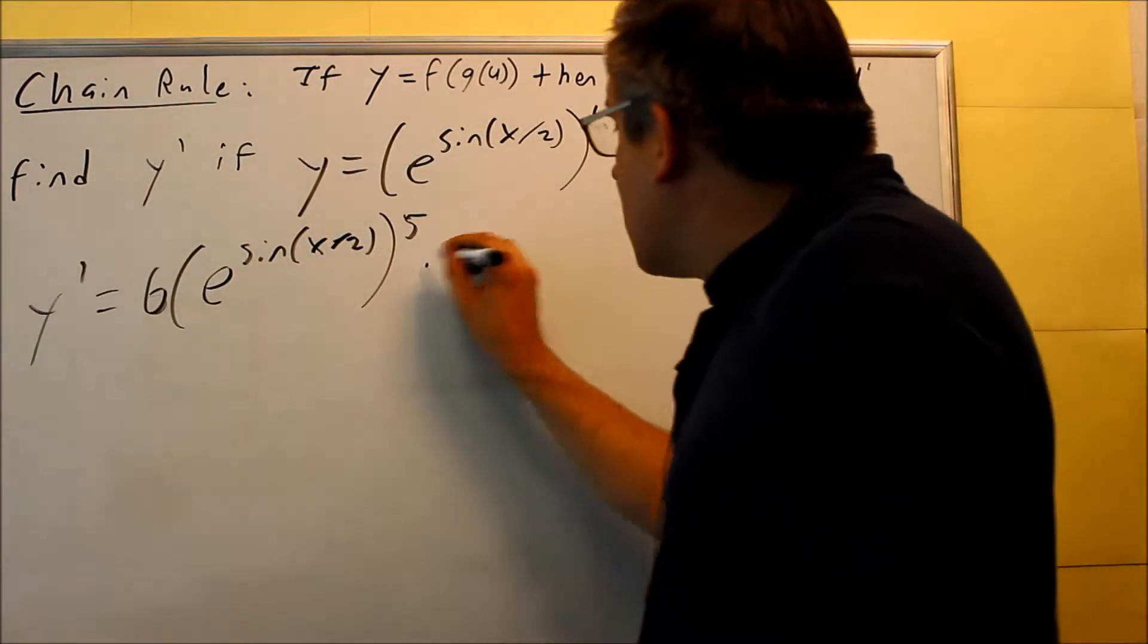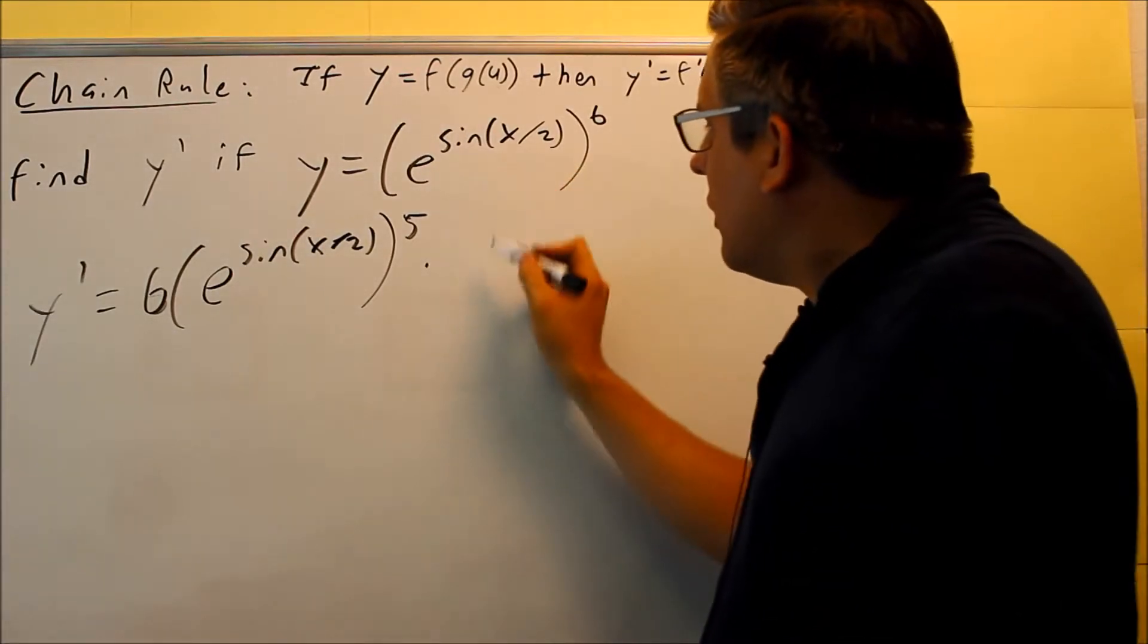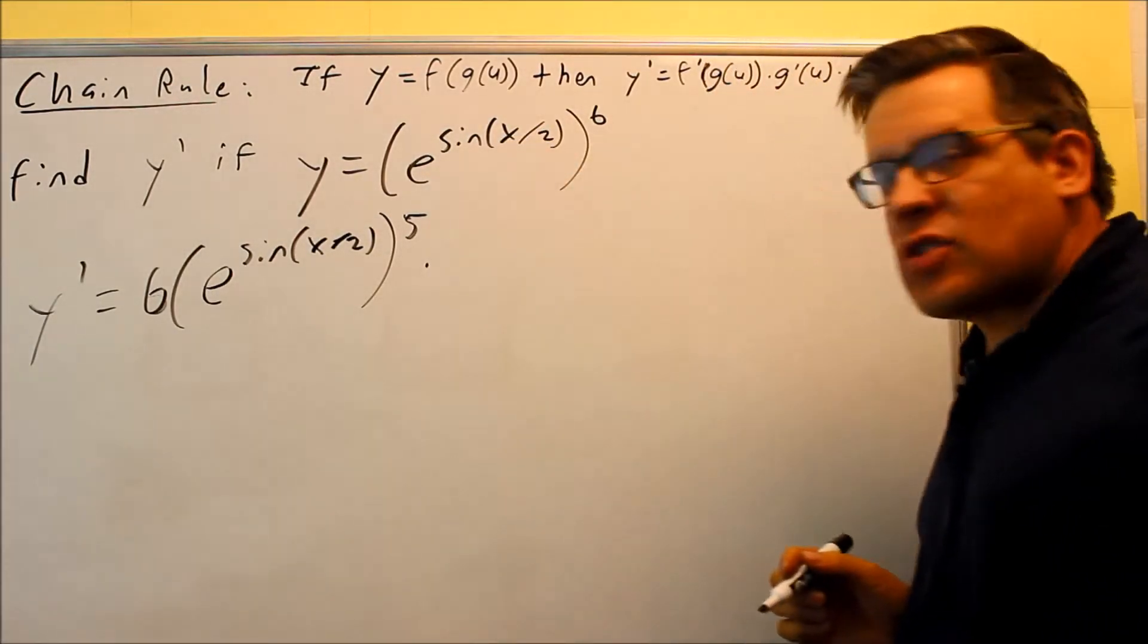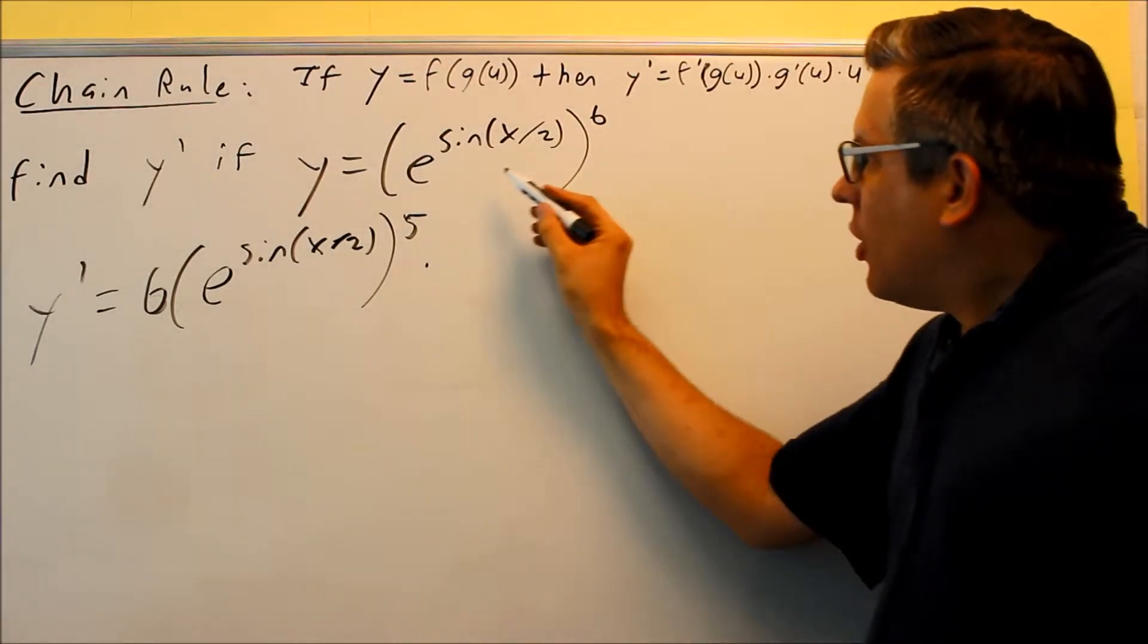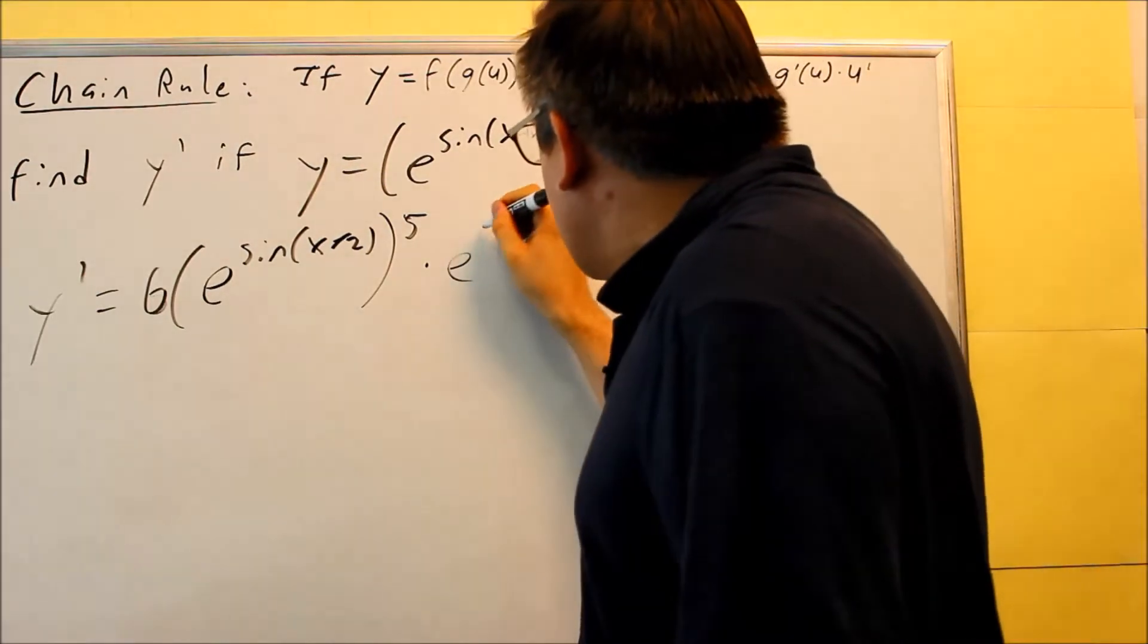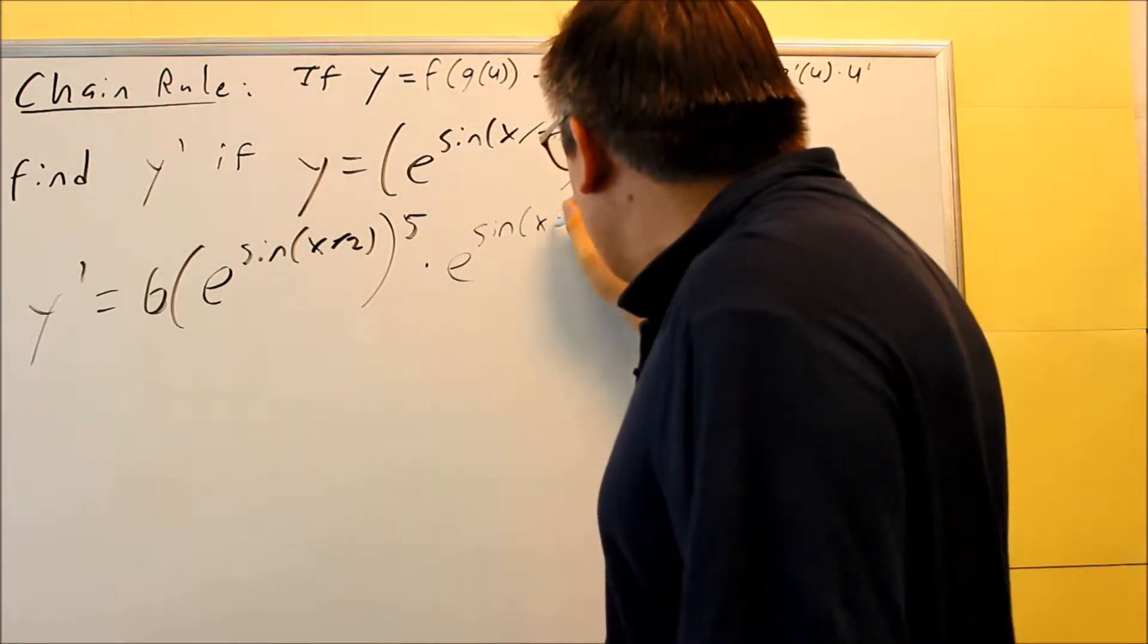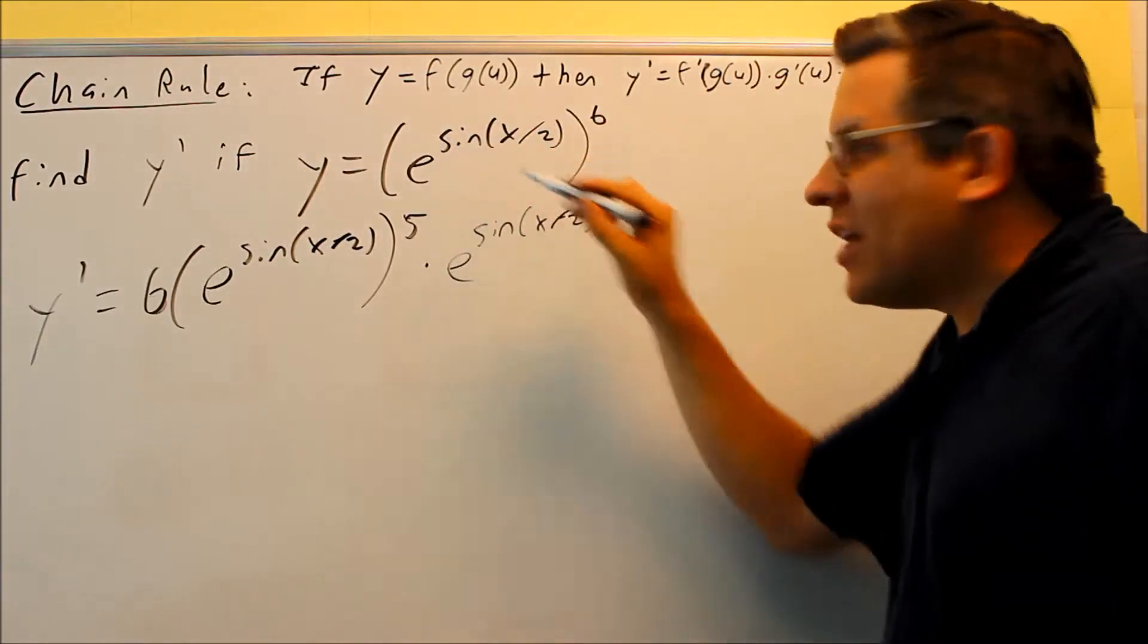Now I need to take care of the derivative of the inside one. I want to do the derivative of e sine x over 2. We talked about before that when you do a derivative of e to the u, you're just going to write itself. You'll write e sine x over 2 and then you're going to multiply it by the derivative of the exponent.